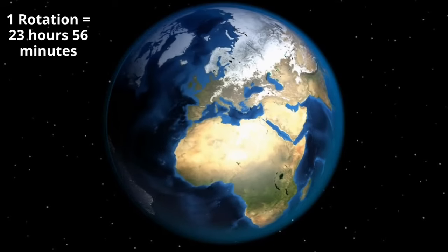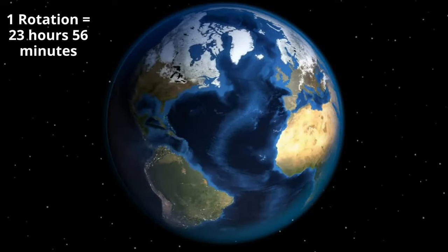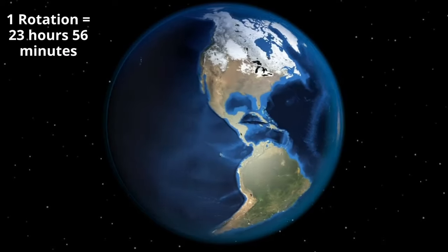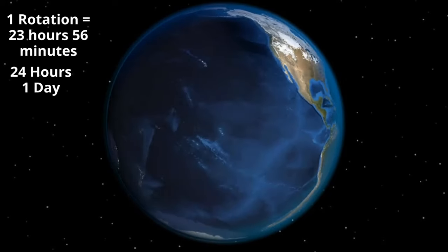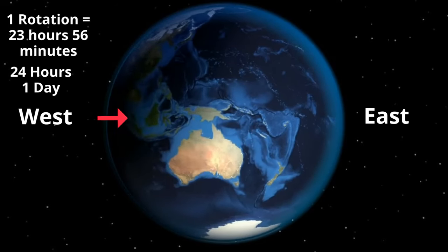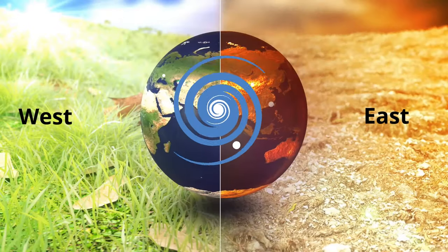It takes the Earth 23 hours and 56 minutes to complete one complete rotation. We round this to 24 hours, which we call one day. The Earth rotates from west to east, which is counterclockwise.